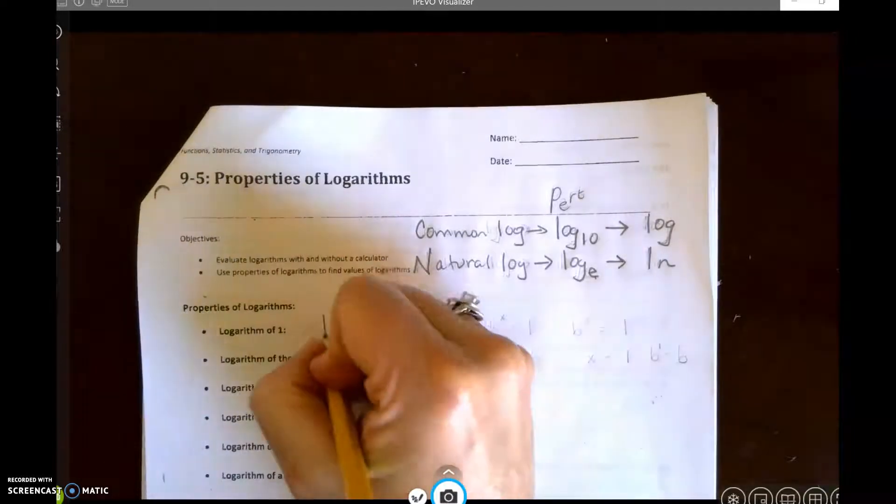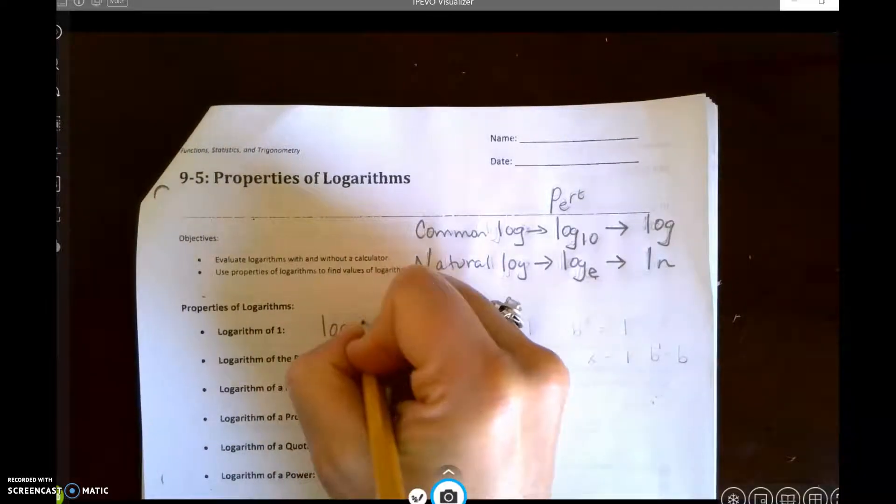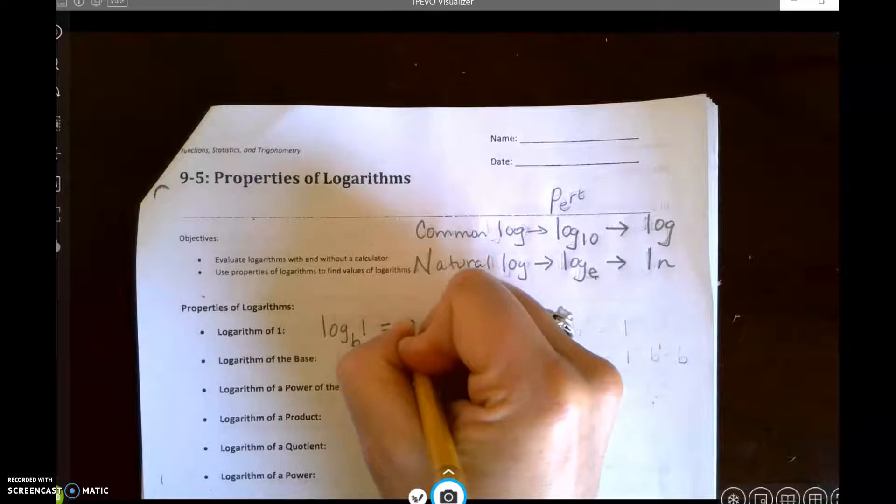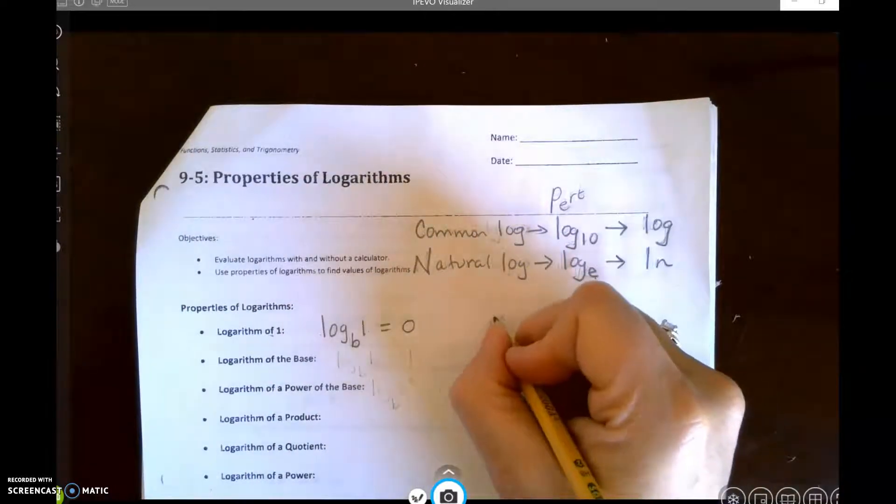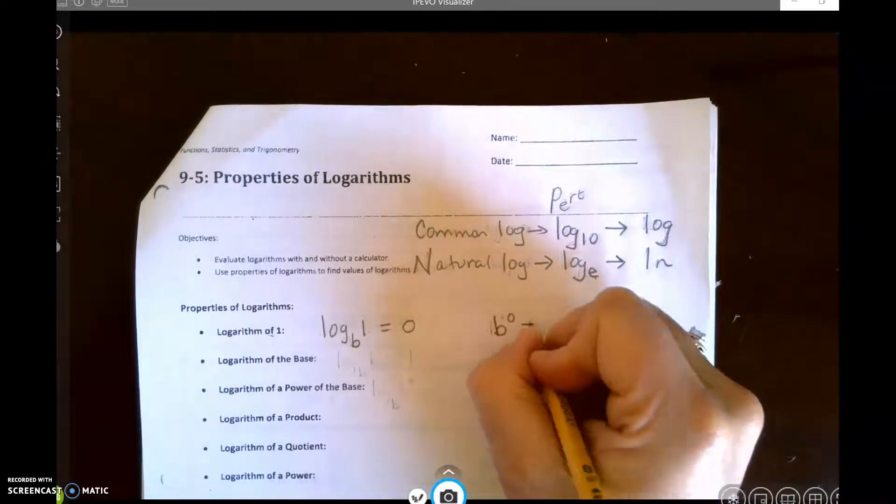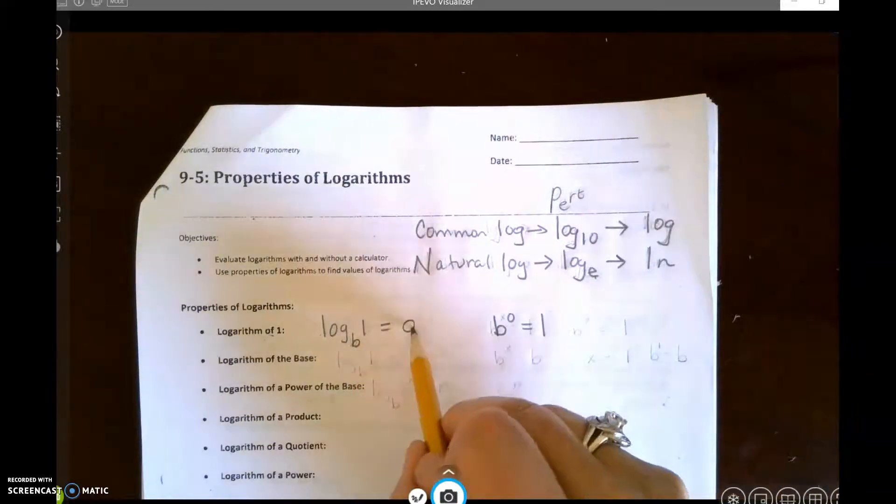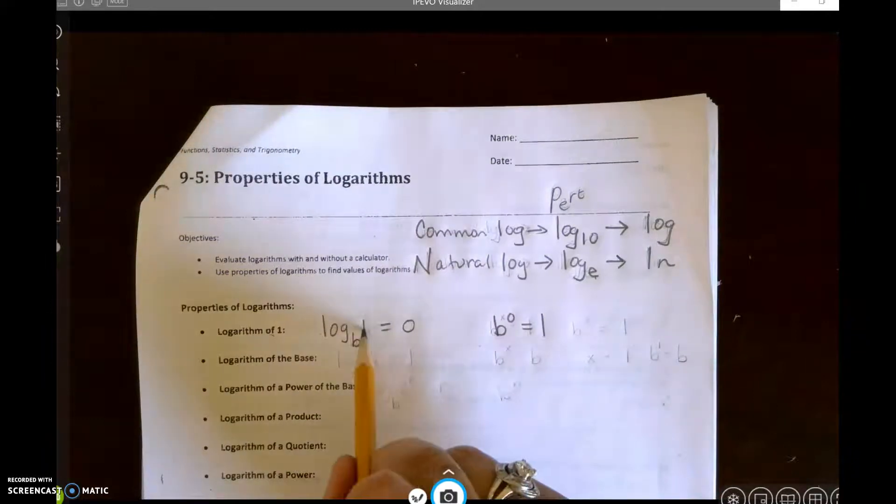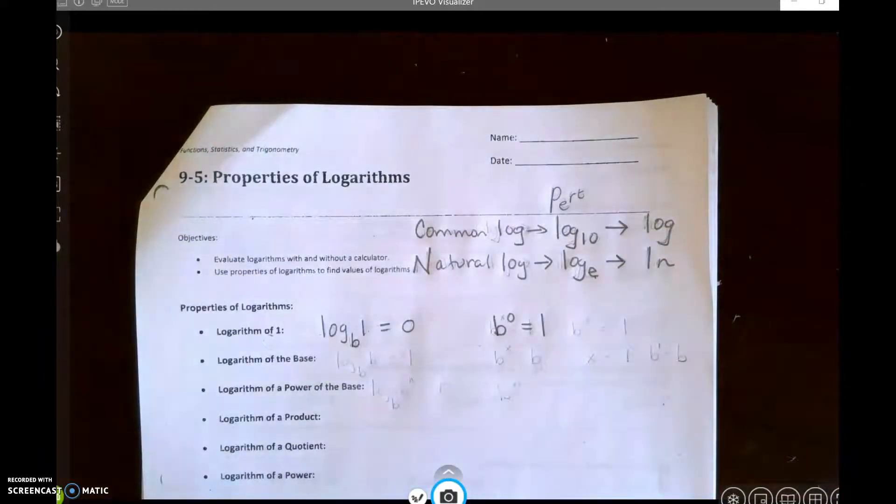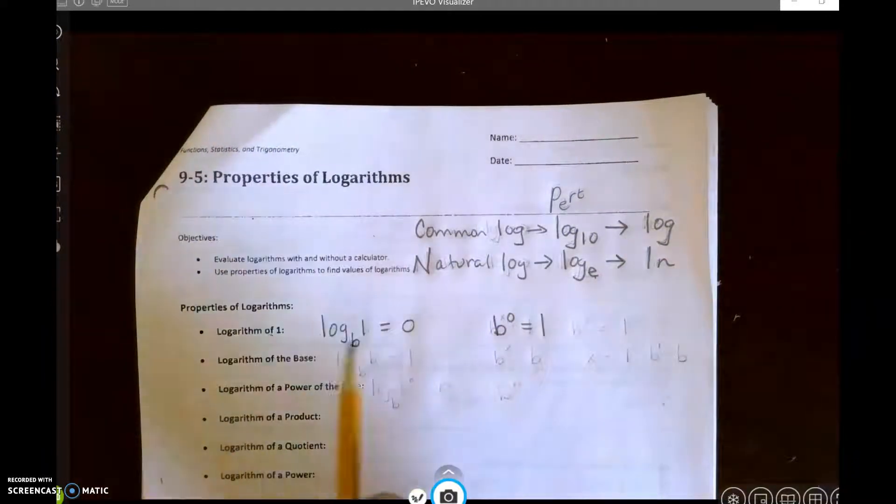The logarithm of 1. So log base b of 1 is simply going to be 0, and that's because b to the 0 equals 1. So the log of 1 is always 0, no matter what the base is.